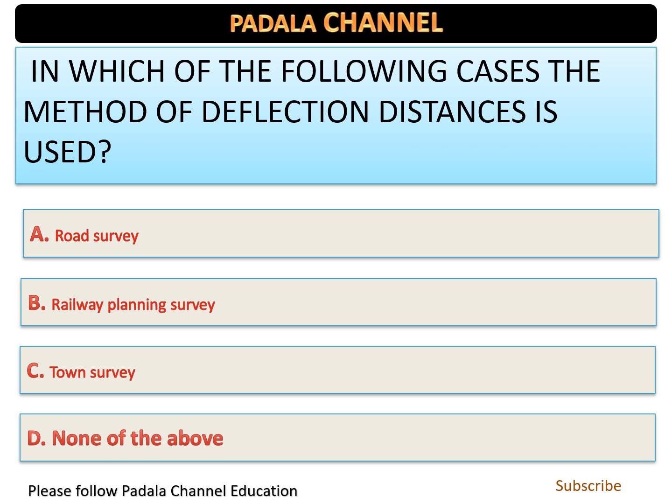Please subscribe to our channel for encouragement to continue making videos. In which of the following cases is the method of deflection distances used? The options are road surveying, railway planning, and town planning. This is a simple question — option A, road surveying, is the answer.